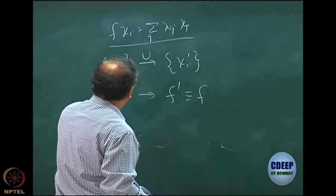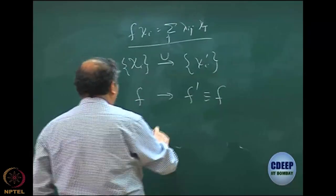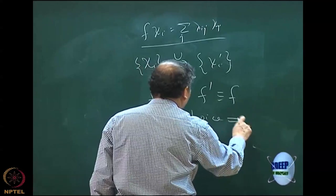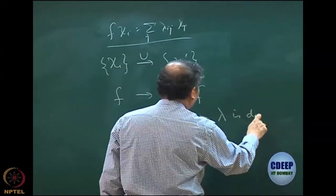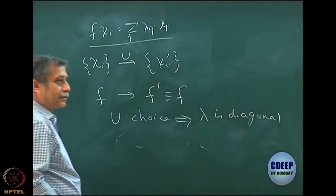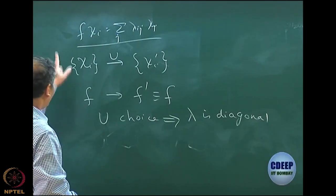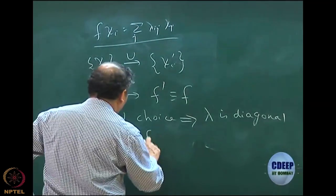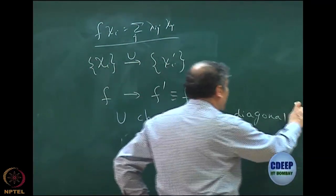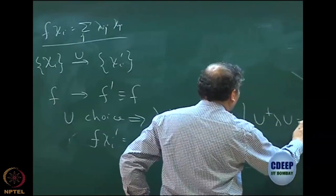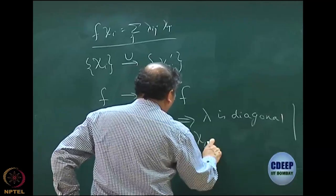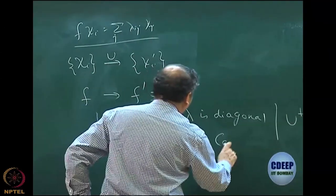Then we said that we can choose a U such that λ becomes diagonal. With such a U, we can write the new set of equations as f χ_i prime, and the diagonal λ essentially means U† λ U gives some ε which is a diagonal matrix, so you have ε_i χ_i prime. This is what we call the canonical Hartree-Fock equation.